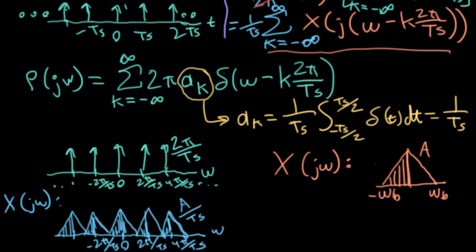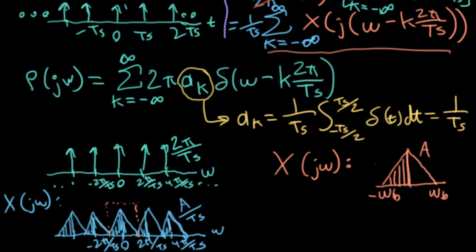Now suppose I wanted to get my original signal back. I could do that with just an ideal low-pass filter — I'm not trying to plot this to scale — but this low-pass filter would cut off all of these copies up here, killing all those copies. Remember there's an infinite number of these alias copies going in either direction. So I can kill off all of those copies and be left with my original signal, and that's really amazing.